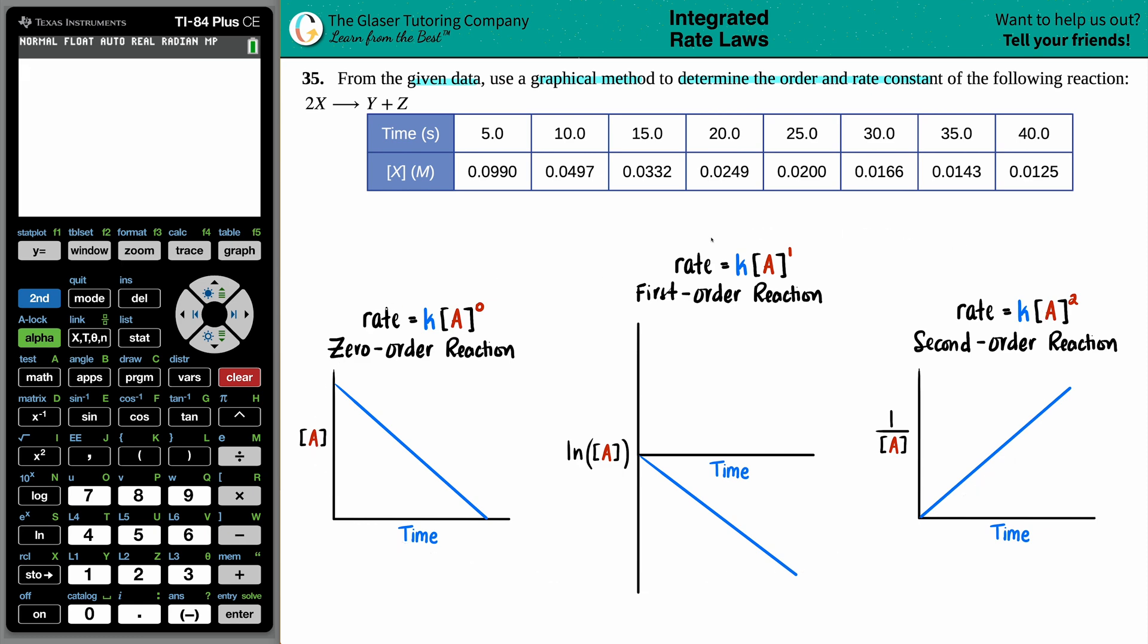Now, down here I have written the three general graphs and what they look like for zero-order reactions, first-order, and second-order reactions. In my generalization here I wrote down that A is the reactant, but in our specific case here our reactant is x. So for our case it would be rate equals k times the x value raised to some value. Now, they didn't necessarily say that this equation was an elementary step. If it was an elementary step we could use those coefficients to say this is definitely a second-order reaction. However, we don't know if it is, so that's why we have to use our data.